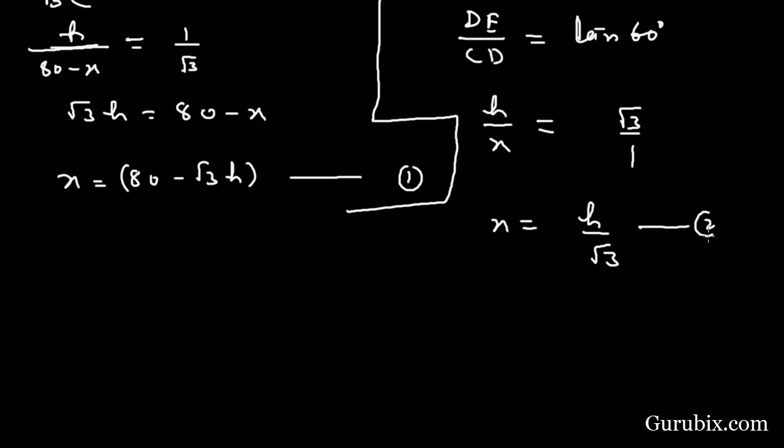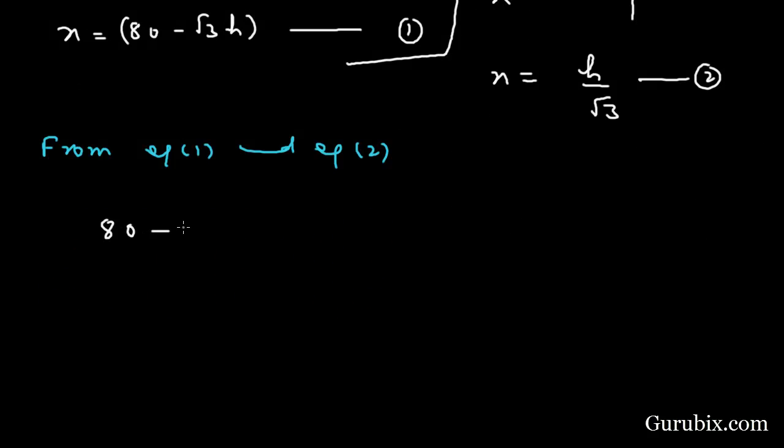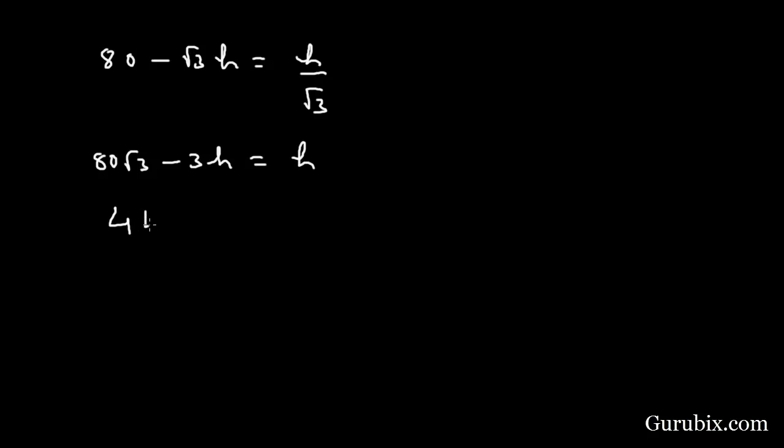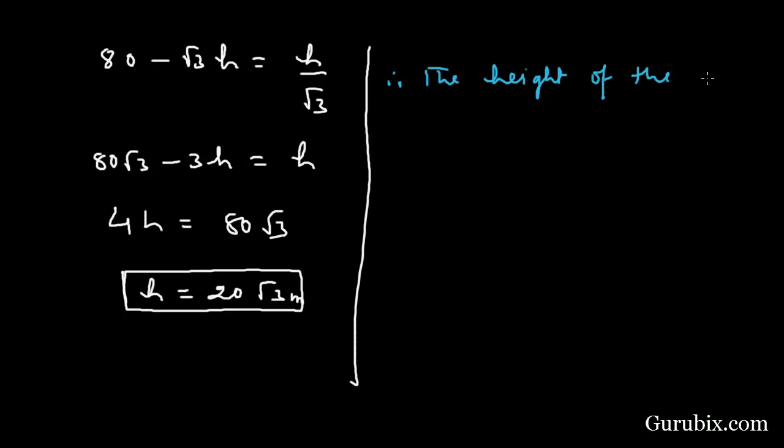From equation number 1 and equation number 2, we have 80 minus square root of 3 times h equals h over square root of 3. We shall multiply both sides by square root of 3. Then we have 80 square root of 3 minus 3h equals h. This means 4h equals 80 square root of 3. Therefore, h equals 20 square root of 3 meters. The height of the poles is 20 square root of 3 meters.